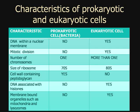Membrane-bound organelles like mitochondria, lysosomes, endoplasmic reticulum, rough endoplasmic reticulum, smooth endoplasmic reticulum, etc.: prokaryotic cells do not have these. Eukaryotic cells do — they are far more complex.